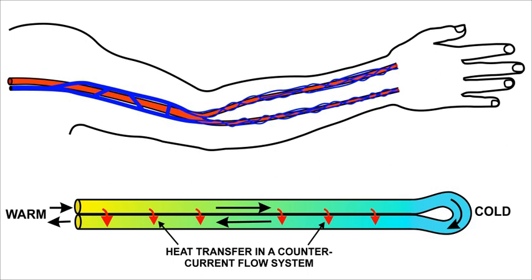In countercurrent flow, the two flows move in opposite directions. Two tubes have a liquid flowing in opposite directions, transferring a property from one tube to the other — for example, transferring heat from a hot flow of liquid to a cold one, or transferring the concentration of a dissolved solute from a high concentration flow to a low concentration flow. The countercurrent exchange system can maintain a nearly constant gradient between the two flows over their entire length of contact. With a sufficiently long length and a sufficiently low flow rate, this can result in almost all of the property being transferred.